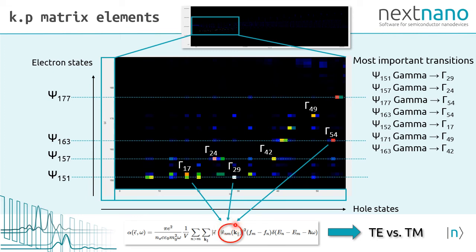These momentum matrix elements are calculated for all k parallel vectors and then summed up. Taking into account the polarization, we can finally calculate the absorption and emission spectrum.